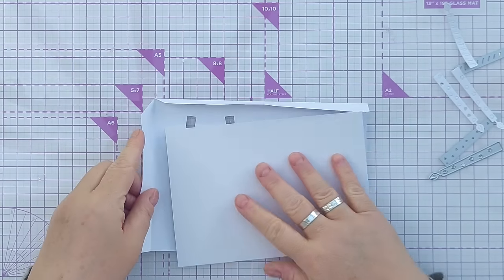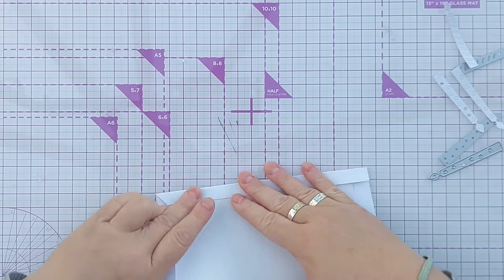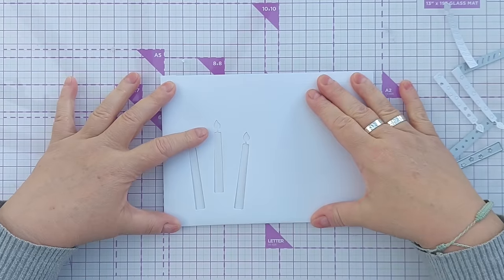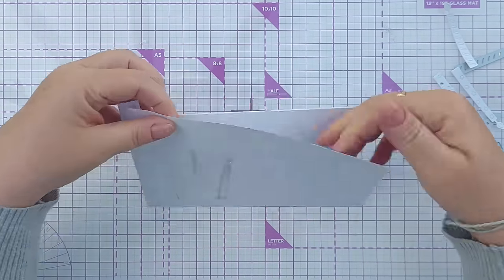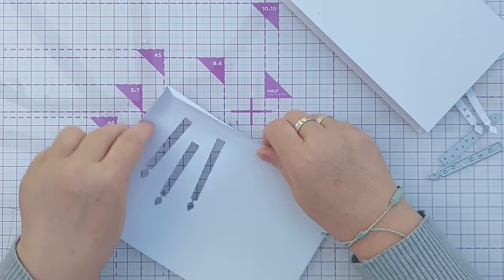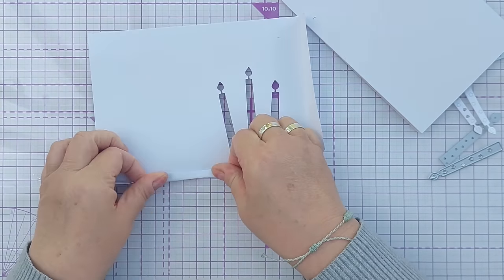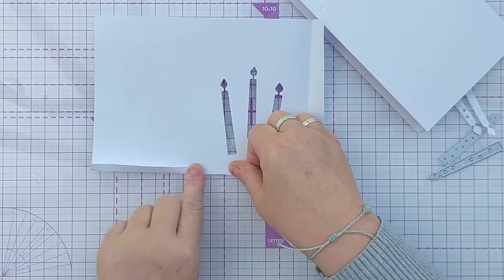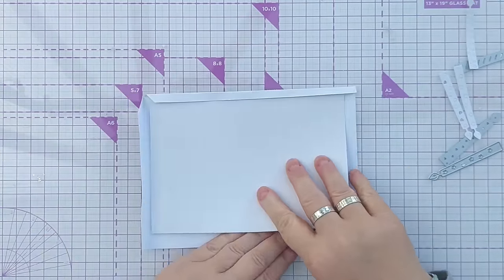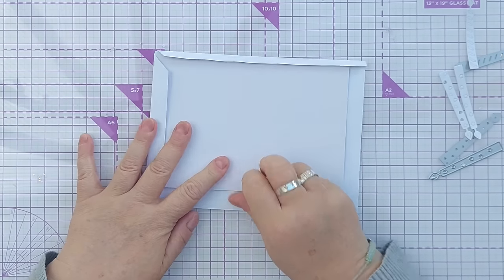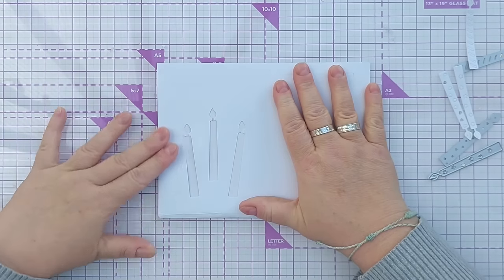I'll slot my card in, butt it up against there, and now my birthday candles are in the right place. Actually I think they might be a bit low, so I'm going to adjust this here and fold it up a little bit lower down. I think that's better. They're a little bit higher up now in the right place.